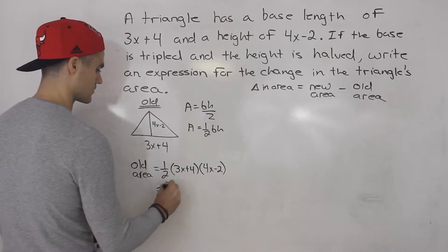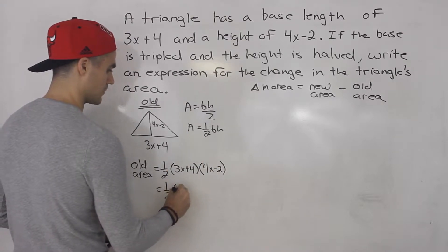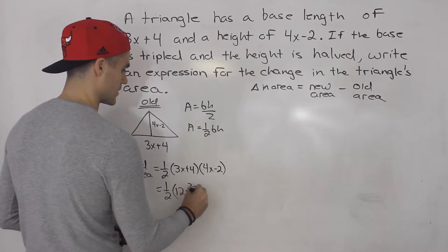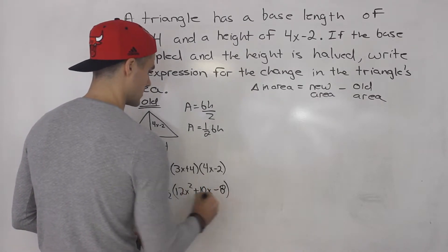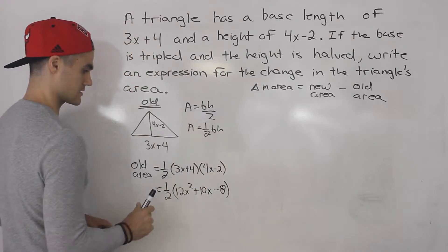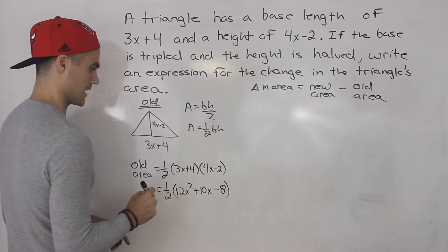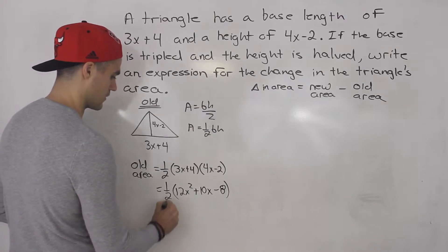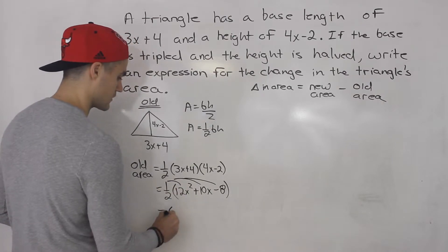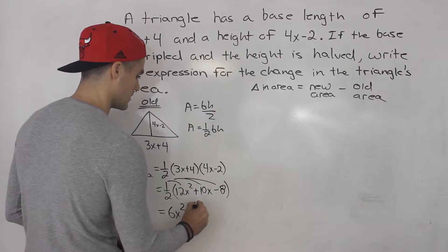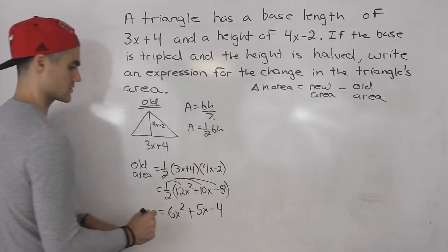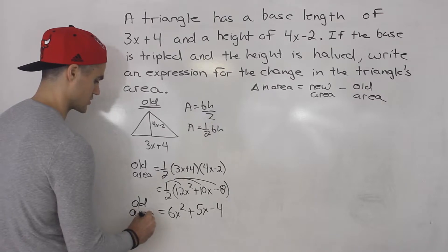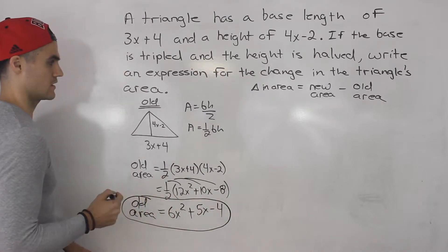We can FOIL out these two brackets. That gives us 12x squared, then minus 6x plus 16x which is positive 10x, and minus 8. Then distributing the one half: one half times 12 gives us 6x squared, 10x times one half gives us 5x, and minus 8 times one half gives us minus 4. So the old area is 6x squared plus 5x minus 4.